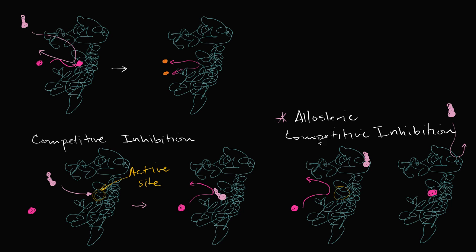I want to emphasize this point, because it's sometimes confused — even in things you'll read on the internet. They'll say that allosteric inhibition is non-competitive, because you're not competing for the active site. But that is actually not the case. In non-competitive inhibition, the inhibitor can bind regardless of whether the substrate has bound or not, but when the inhibitor does bind, it prevents the reaction from moving forward — it changes the conformation of the protein so it no longer catalyzes the reaction. So in non-competitive inhibition, both can bind, but if the inhibitor is there, the reaction isn't going to proceed. In competitive inhibition, whether allosteric or non-allosteric, only one of the substrate or the inhibitor is going to be able to bind. They're competing for the enzyme.